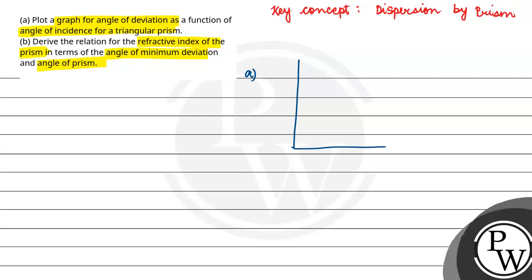This is our y-axis. Here is our x-axis. Here is our y-axis, angle of deviation. Here is our x-axis. Here is our i, and let's suppose here is our i2.